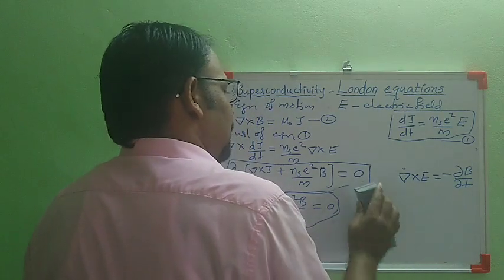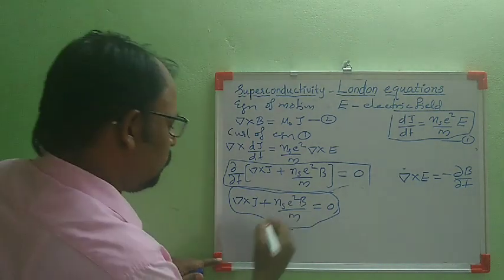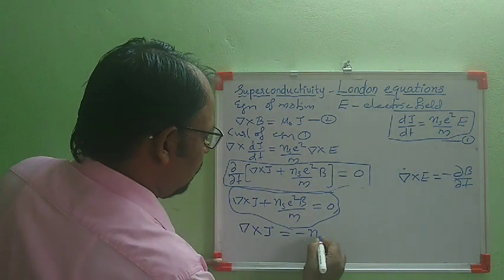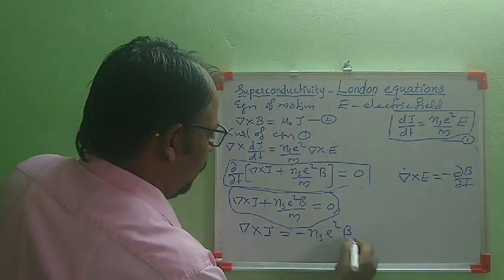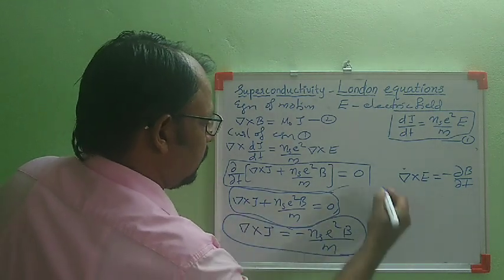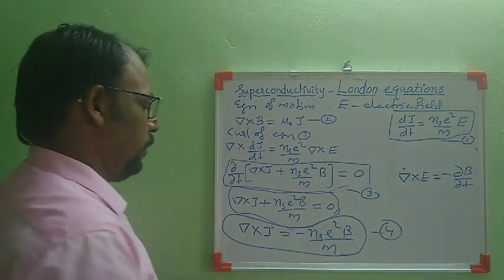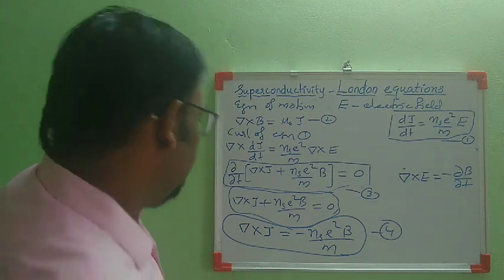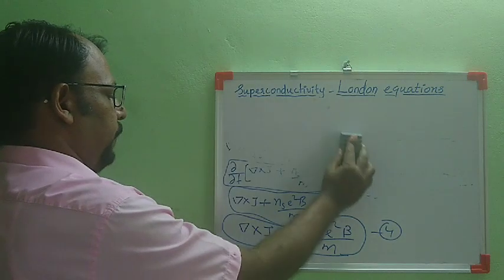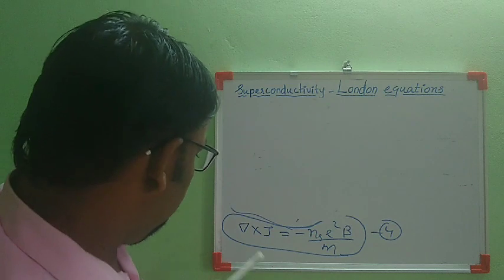From that equation, we can write del × J = -(Nse²/M)·B. This is equation 4, called the London equation, and using this equation we can explain the Meissner effect and several electrodynamic properties of superconductors.